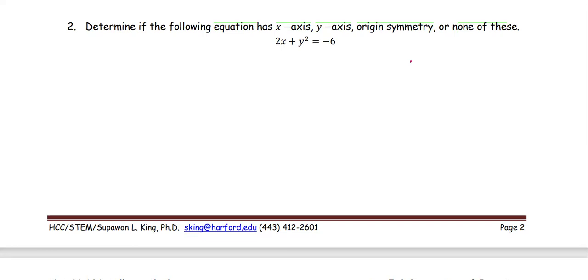For this example, we are going to determine if the following equation has x-axis, y-axis, or origin symmetry, or none of these. The equation is in the form of 2x plus y squared equals negative 6.